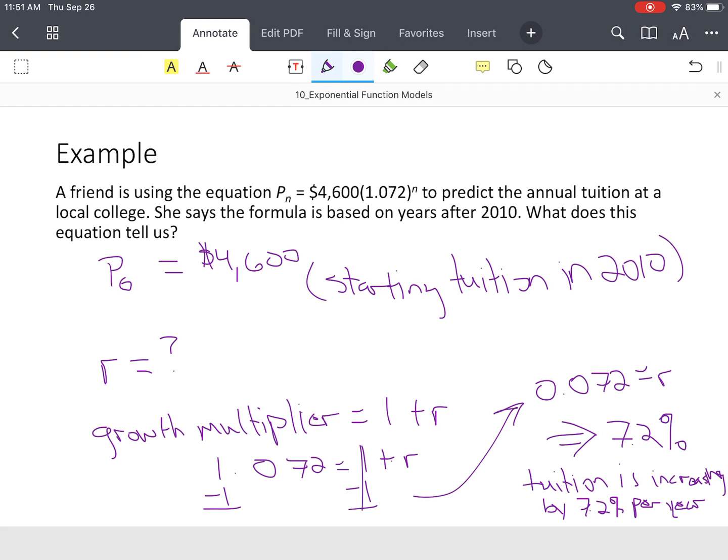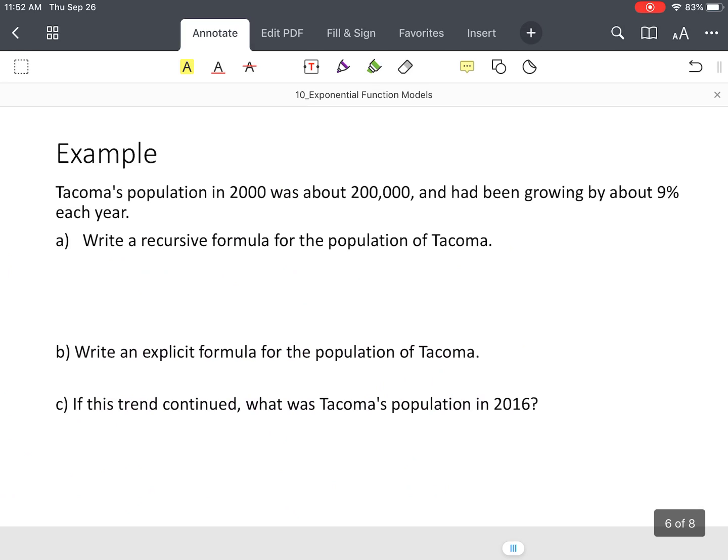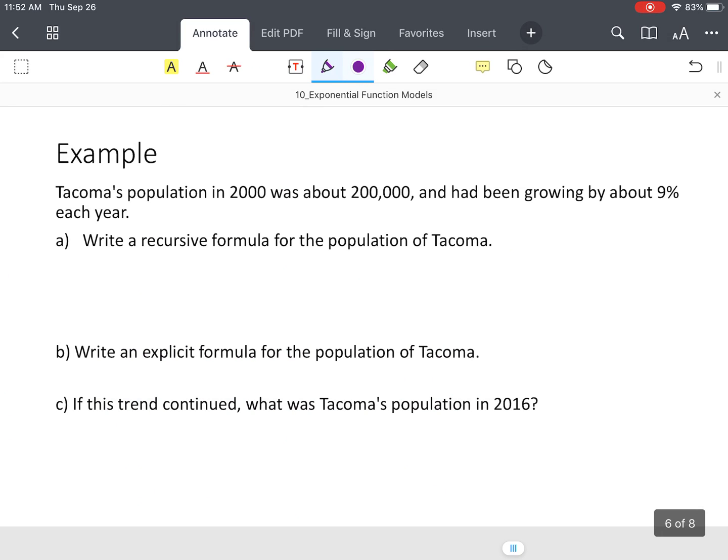All right, so now notice, it didn't ask us to solve for anything. We just had to dissect what was given. One more example of exponential growth. Tacoma, Washington's population in 2000, this is year 2000, it was about 200,000 people. And the population of that city has been growing by about 9% each year. Write a recursive formula for the population of Tacoma. Write an explicit formula for the population of Tacoma.